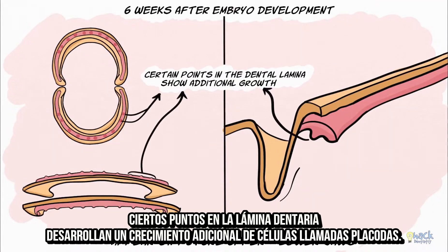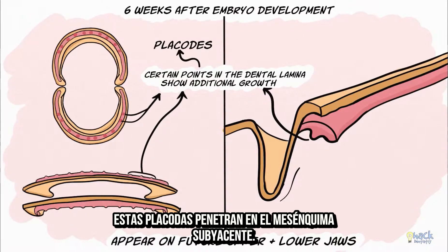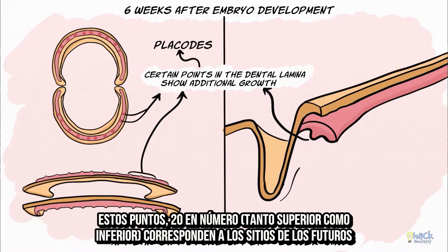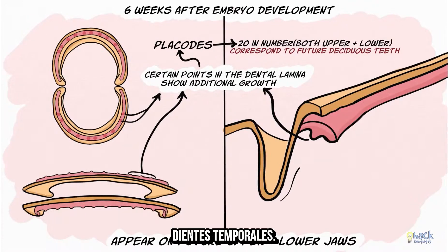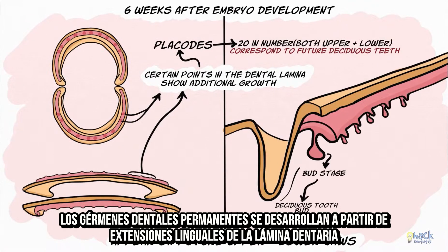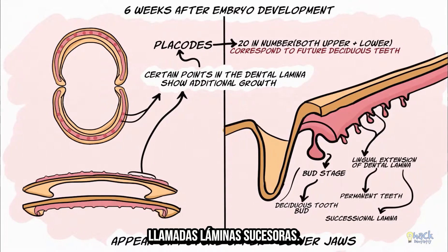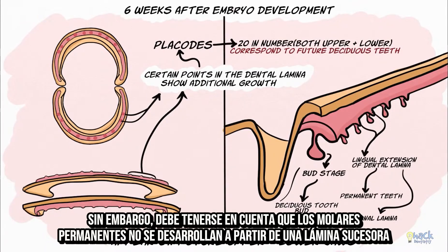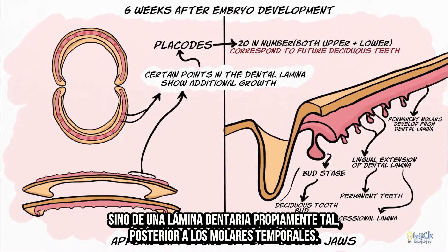Certain points in the dental lamina develop an additional growth of cells called placodes. These placodes protrude into the underlying mesenchyme, and these points, 20 in number, correspond to the sites of the future deciduous teeth. The permanent tooth germs develop from lingual extensions of the dental lamina called successional lamina. However, permanent molars do not develop from successional lamina and arise from the dental lamina itself, posterior to the primary molars.